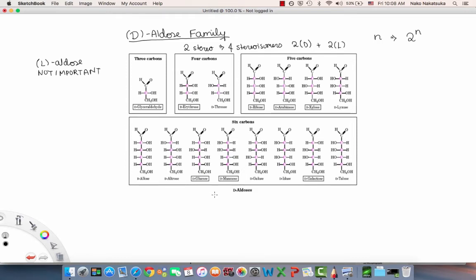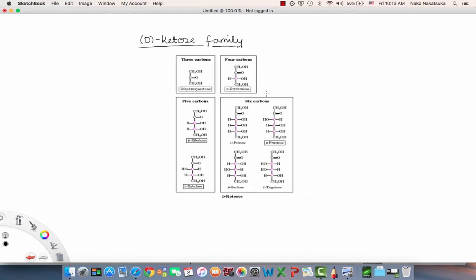Now let's look at the ketose family. Looking at the D-ketose family, it's a lot less than the D-aldose family because they have less stereocenters. Also, the aldose family is the more common one, so there's a lot less ketoses that you'll need to memorize for this course.